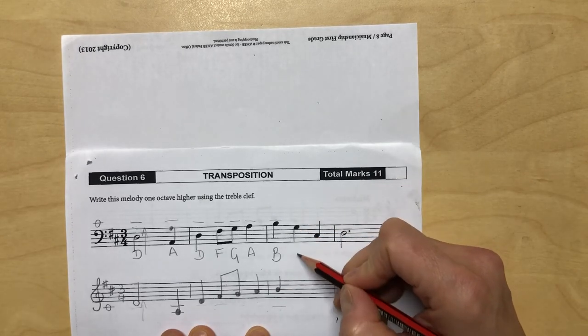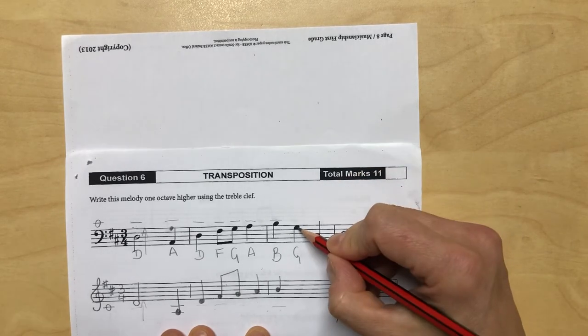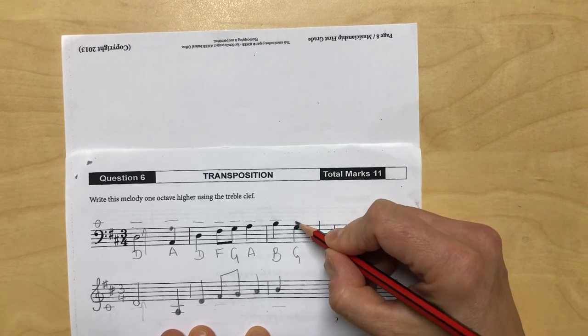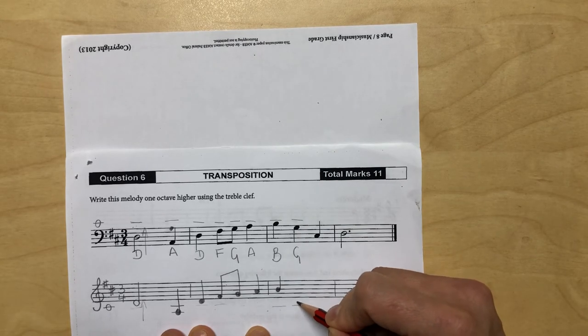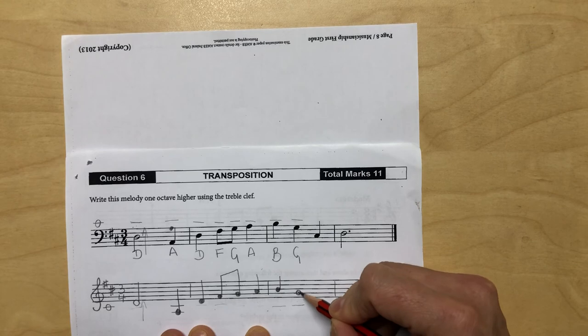This note is G - all cows eat grass. G, A, B, C, C, D, E, F, G.